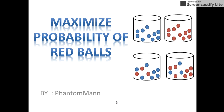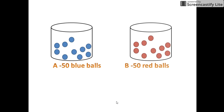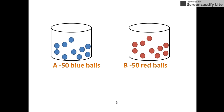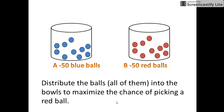Hey friends, today let us see a puzzle based on the probability concept to maximize the probability of red balls. In this puzzle there are two jars given to us, and 50 red balls and 50 blue balls. Suppose your friend grabs one ball randomly from any of the jars. Remember, all the hundred balls must be placed in the two jars. How would you maximize the chance that your friend will draw a red ball?